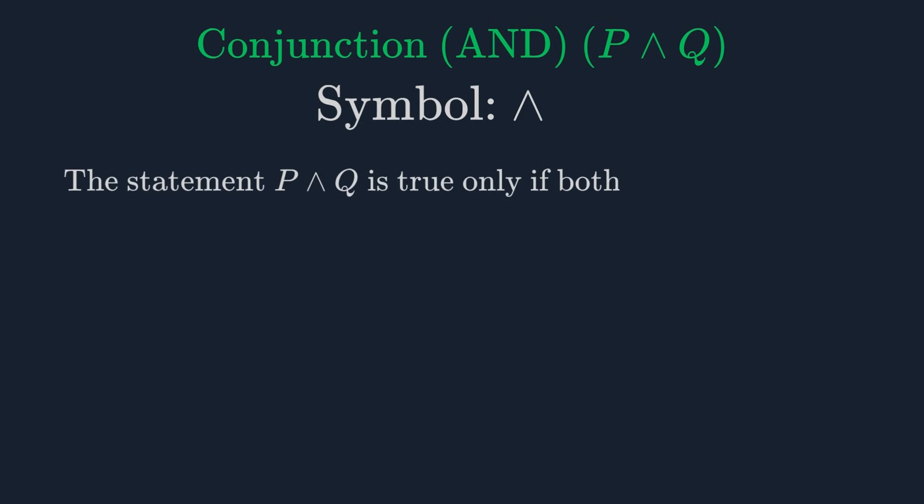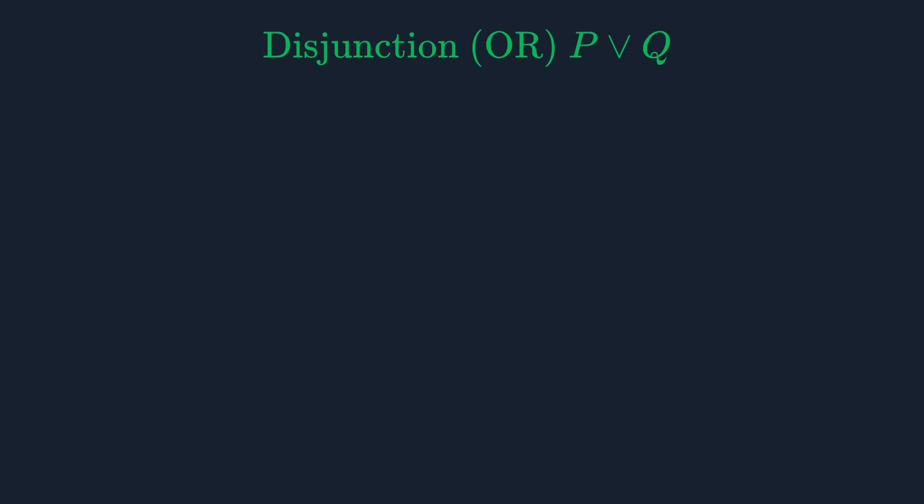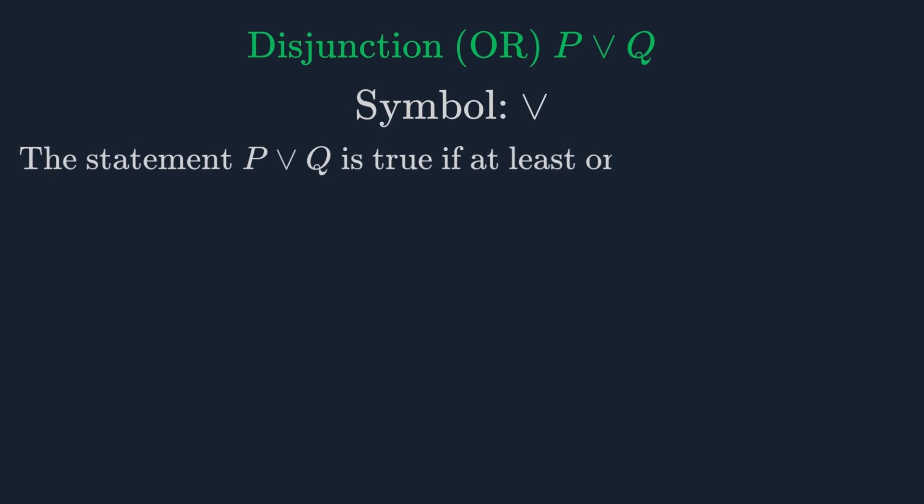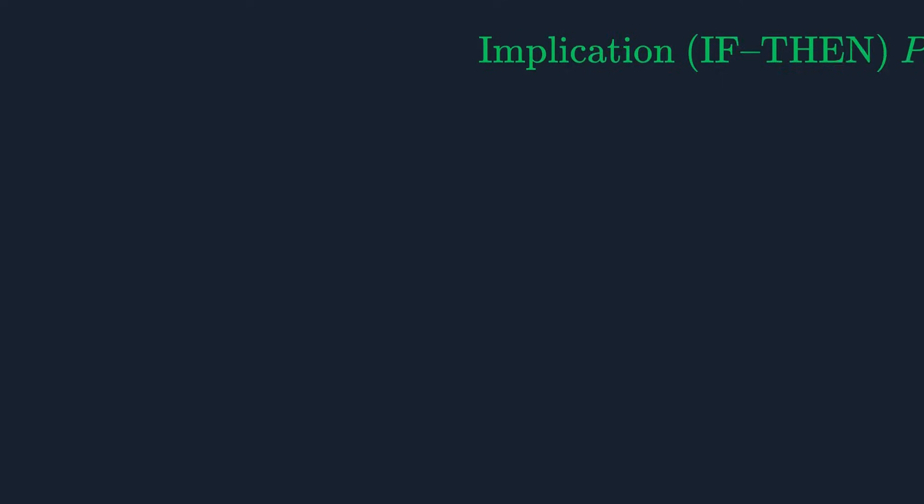Next is conjunction, or AND, represented by this upside-down V. The statement P AND Q is only true if both P and Q are true. If either one is false, the whole statement is false. Then we have disjunction, or OR, represented by a regular V. The statement P OR Q is true if at least one of P or Q is true. It's only false if both P and Q are false.